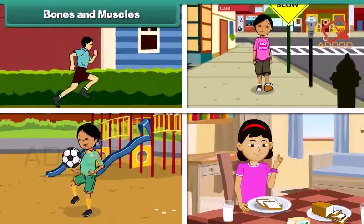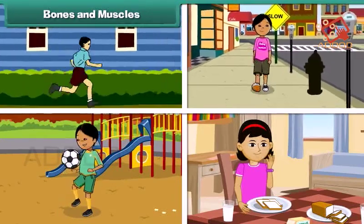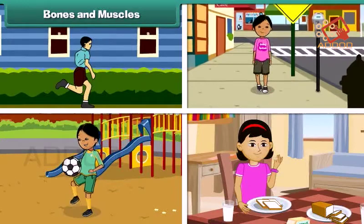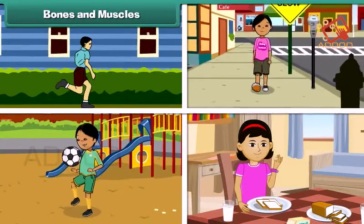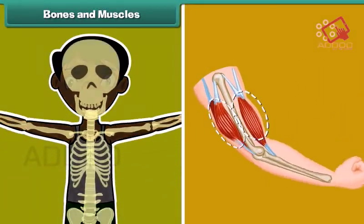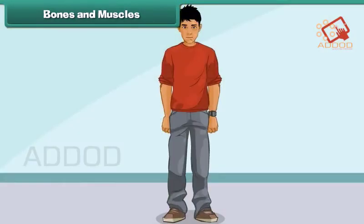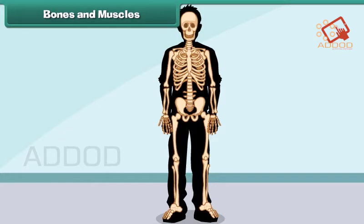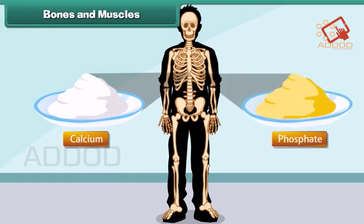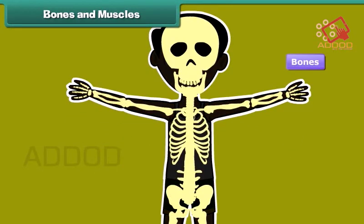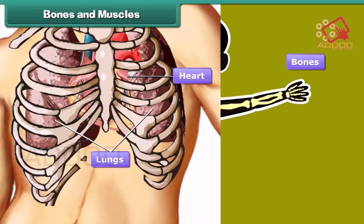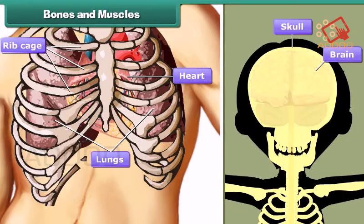Bones and muscles: running, jumping, walking, moving, folding hands, swinging legs, etc. are activities that involve movement of organs of the human body. All these activities are made possible by bones and muscles. Bones are hard organs made up of minerals like calcium and phosphate. They provide a framework, support, and protection to internal organs. For example, the heart and lungs are protected by the ribcage, and the skull shields the brain. Muscles attach bones to one another and facilitate movement.